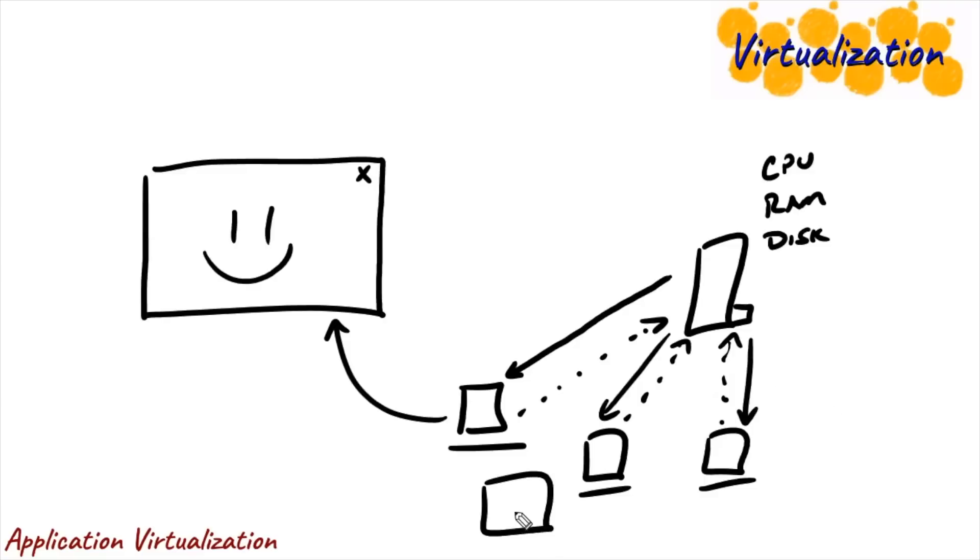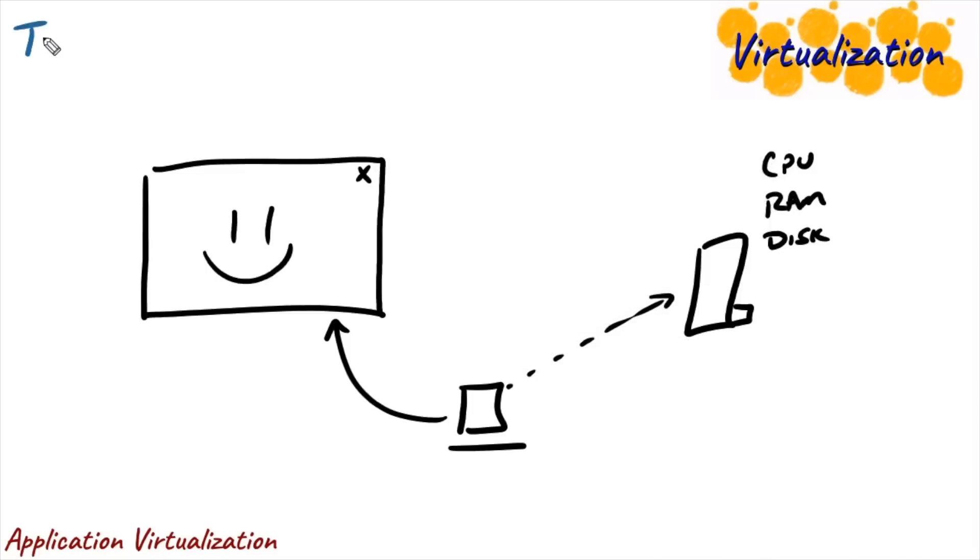And each of these users could be independently running that application, seeing their own personal window. This means that the application doesn't have to be deployed 10,000 times for 10,000 users but just enough times on enough servers to support those users connecting in. This actually increases the weight of responsibility on our network to support these connections going back and forth. You literally can't run the program if you don't have access to the network. But it decouples the application from the box that the user sits on. So this first style of application virtualization often goes under the term of terminal services or a remote desktop experience.